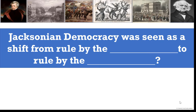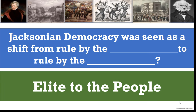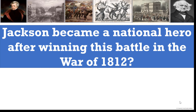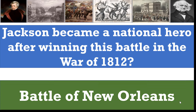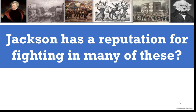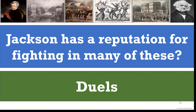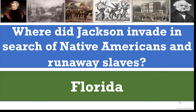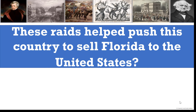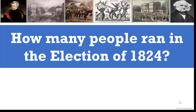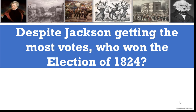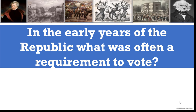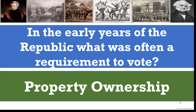Jacksonian democracy was seen as a shift from rule by the elite to rule by the people. Jackson became a national hero after winning the Battle of New Orleans in the War of 1812. Jackson has a reputation for fighting in many duels. He invaded Florida in search of Native Americans and runaway slaves. Those raids helped push Spain to sell Florida to the United States. Four people ran for the election of 1824. In the early years of the republic, property ownership was often a requirement to vote.